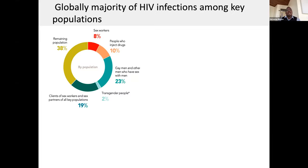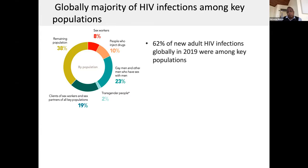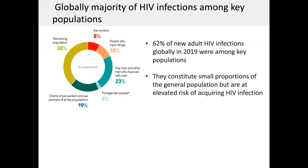Nonetheless, globally, the majority of new HIV infections do occur among key populations. Approximately 62% of new adult HIV infections globally in 2019 were among key populations — populations like sex workers and their clients, people who inject drugs, gay men, and other groups. Although these key populations constitute a small proportion of the general population, they are at elevated risk of acquiring HIV infection.